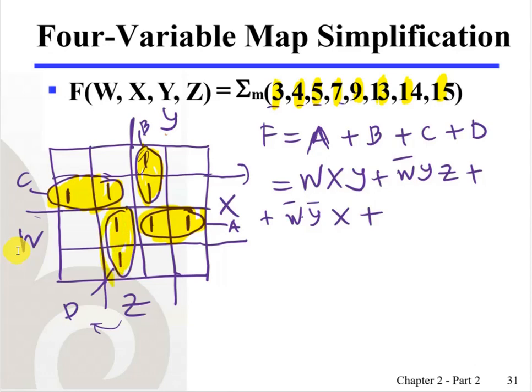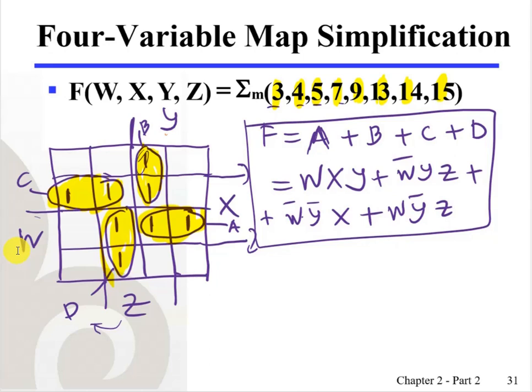Finally, for the fourth group, what do we have here? Z doesn't change, W doesn't change, only X and Y change. So we have W and Z. As defined. So you can see that initially the function has eight terms in canonical sum of products. Using K-map, we reduce those eight terms into four terms - the optimized function.